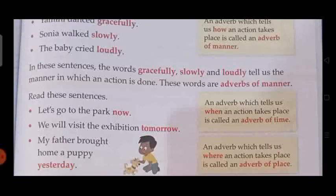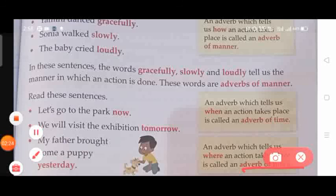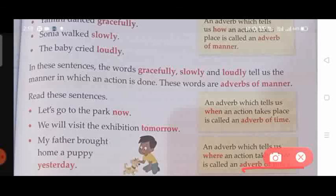The third type is adverbs of place, sometimes called spatial adverbs, which explain where an action happens. Adverbs of place are associated with the verb in a sentence, providing context for direction, distance, and position. Examples include: south, east, everywhere, up, left, close by, back, inside, around. These terms don't usually end in '-ly'. This was all about the chapter on adverbs — I hope you have understood. Thank you!